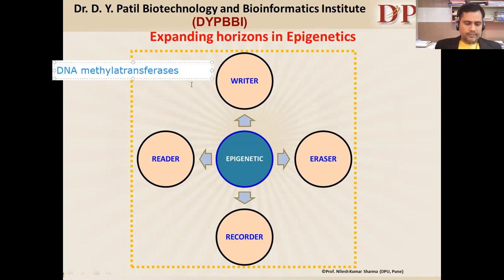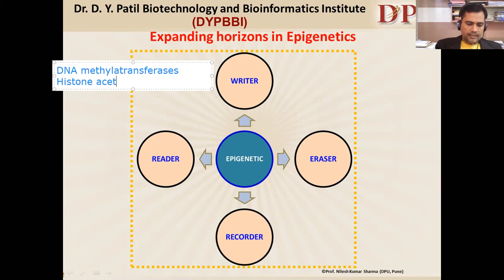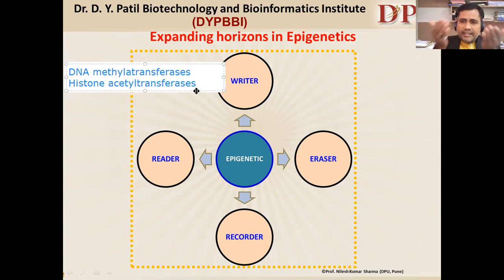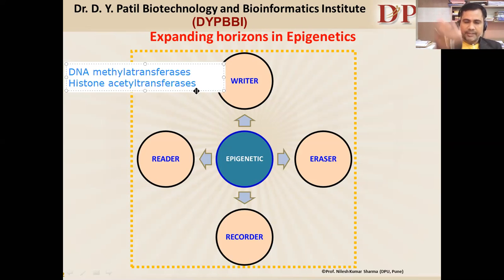These include histone methyltransferases as well. These enzymes play an important role to allow our DNA and chromatin structure, including histone proteins, to be written in the form of a mark, signature, or chemical language — that is, methylation and acetylation. Another very important group of proteins works in reverse, to reverse the language or signature written by these enzymes.